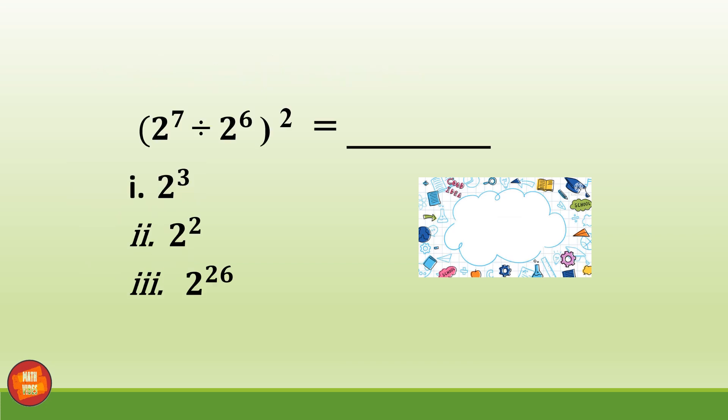Next question, 2 raised to power 7 divided by 2 raised to power 6 whole square is equal to, and the answer is second option 2 square.